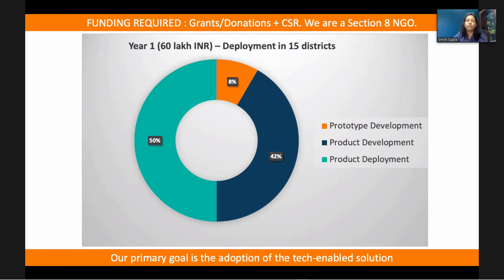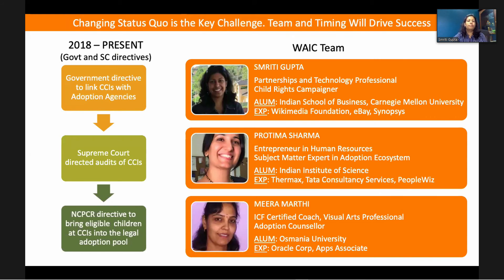We are looking at deployment in about 15 to 20 districts. We are a Section 8 NGO, and our primary goal is to ensure the technology solution is adopted, used, and produces results on the ground. We believe our biggest challenge will be changing the status quo, but we are well positioned to handle that. Our team has backgrounds in technology, business, HR, entrepreneurship, and counselling, and we have all been working in the child welfare space for several years. Since 2018, multiple government and Supreme Court directives have acknowledged that a child belongs with a family — these are the tailwinds we need to ensure the solution is deployed and used on the ground.